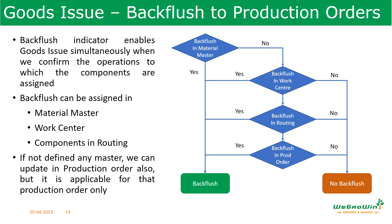The backflush can be assigned in the material master, work center, or components and routing. If it is not defined in the material master, we can define it in the production order directly. The chart shows how the backflush indicator is picked: first from the material master, then the work center, then routing, and finally the production order. Each customer and company will have different needs, so it is important to understand and practice these functions in different scenarios.